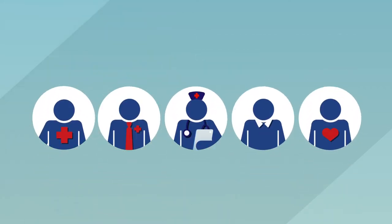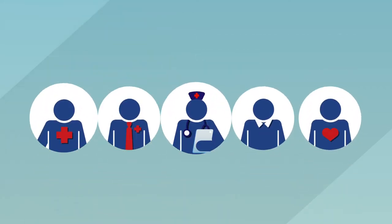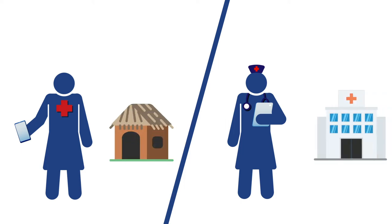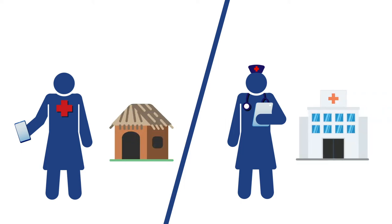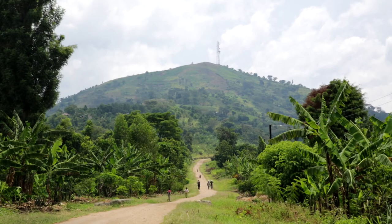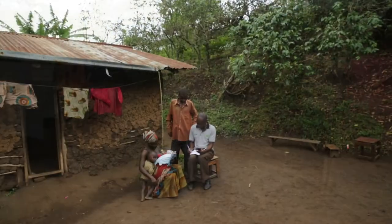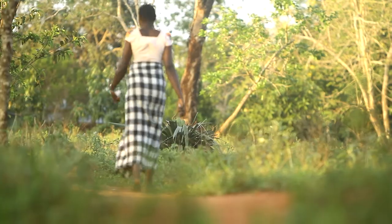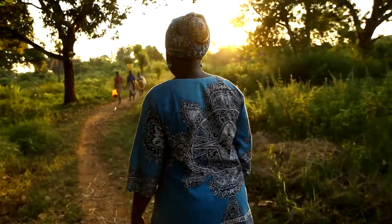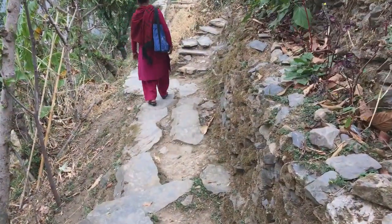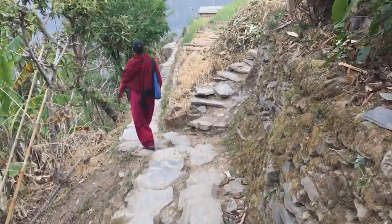The primary users for the Community Health Toolkit are health workers at the community and facility levels. Community health workers are the first and most trusted link to essential care in underserved settings. But CHWs sometimes are disconnected from the formal health system and lack the training, equipment, and support they need.